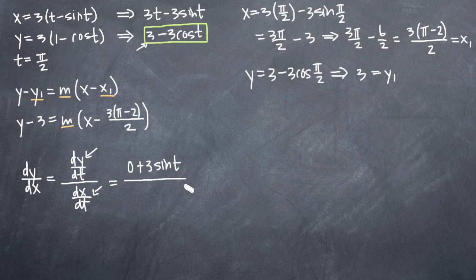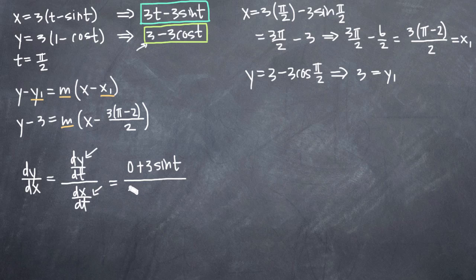Now that we have the derivative of our y function, let's take the derivative of x. We're looking at the simplified equation 3t minus 3 sine t, and taking the derivative with respect to t. The derivative of 3t is just 3, and the derivative of negative 3 sine t is negative 3 cosine t.